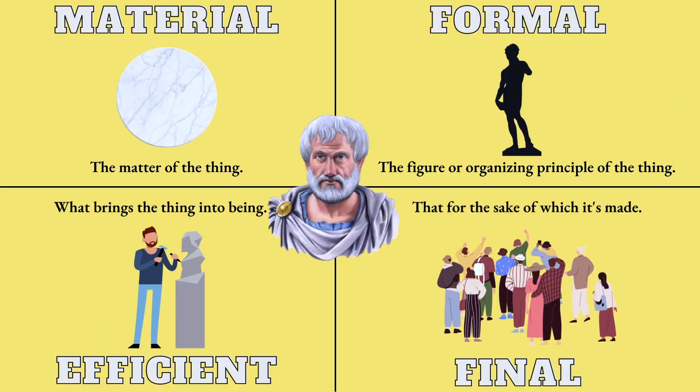Marble explains that which the statue is made of, or the material cause of the thing. The formal cause is the figure or organizing principle of the thing — in this case, the form of David.